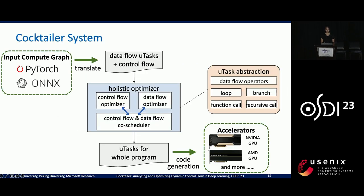Here is an overview of our Cocktailer system. Its input is a compute graph exported by existing deep learning frameworks — for example, an ONNX graph exported from a PyTorch program. We first use a program translator to translate the data flow operations into parallel U-tasks while keeping the control flow unchanged. Then we use a holistic optimizer to coordinate the scheduling of data flow and control flow, with several optimization methods integrated for both. The holistic optimizer generates a whole program represented in U-tasks that can be efficiently executed on accelerators. Cocktailer currently supports NVIDIA GPU and AMD GPU.